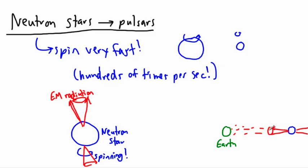As it's going around and around, sometimes it sort of runs into us. As it's pointing, it shoots out this way and it will hit us. So that means a pulsar is just a neutron star that's lined up in the correct way so that we can see its pulse.